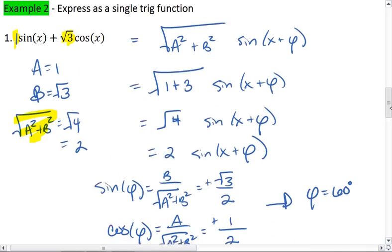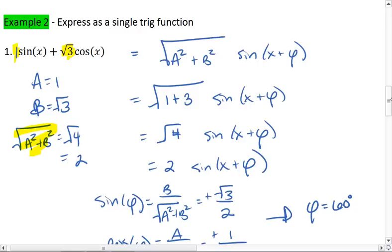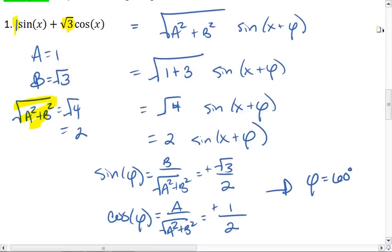We already know from the original problem that x is just going to be x. Or if you don't want to write phi in terms of degrees, we can also write this in radians. It's going to be pi over 3.